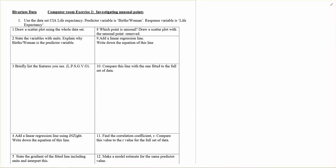So what do you do? We're going to work through this example which is on page 35 of your workbook. Use the data set CIA life expectancy. Predictor variable is births per woman. Response variable is life expectancy. Let's find out about that data set first.